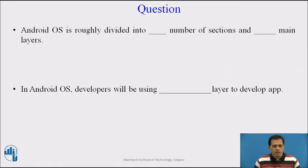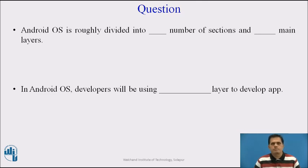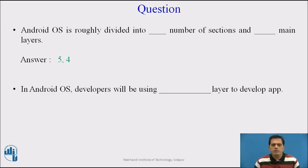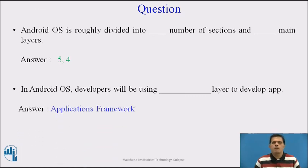Pause the video and answer the questions. Question 1: Android OS is roughly divided into how many sections and main layers? The answer is Android OS is roughly divided into 5 sections and 4 main layers. Question 2: In Android OS, which layer will developers use to develop an app? The answer is the application framework layer, or also the applications layer — both are correct answers.